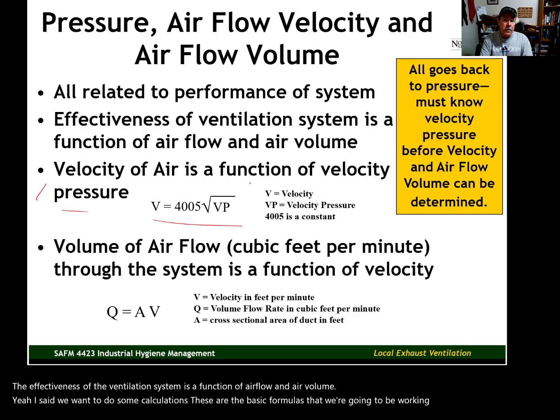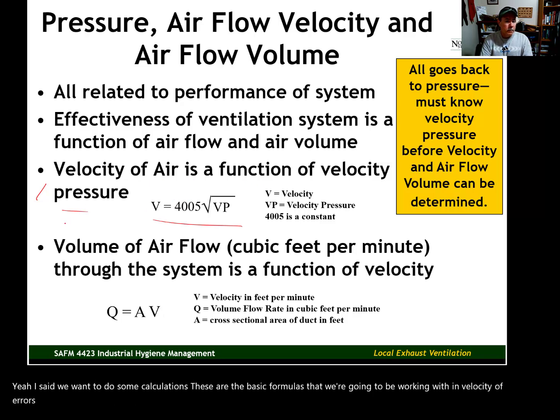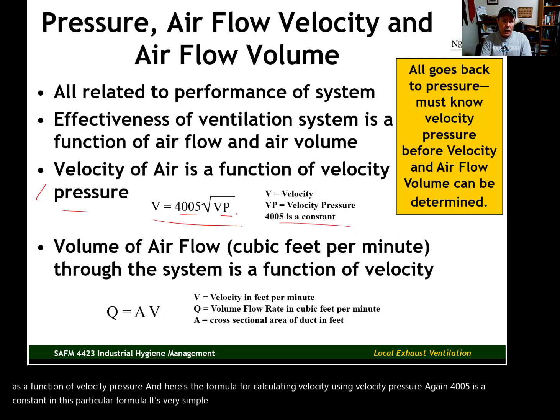Velocity of air is a function of velocity pressure. And here's the formula for calculating velocity using velocity pressure. 4005 is a constant in this particular formula. It's a very simple formula once we know velocity pressure.